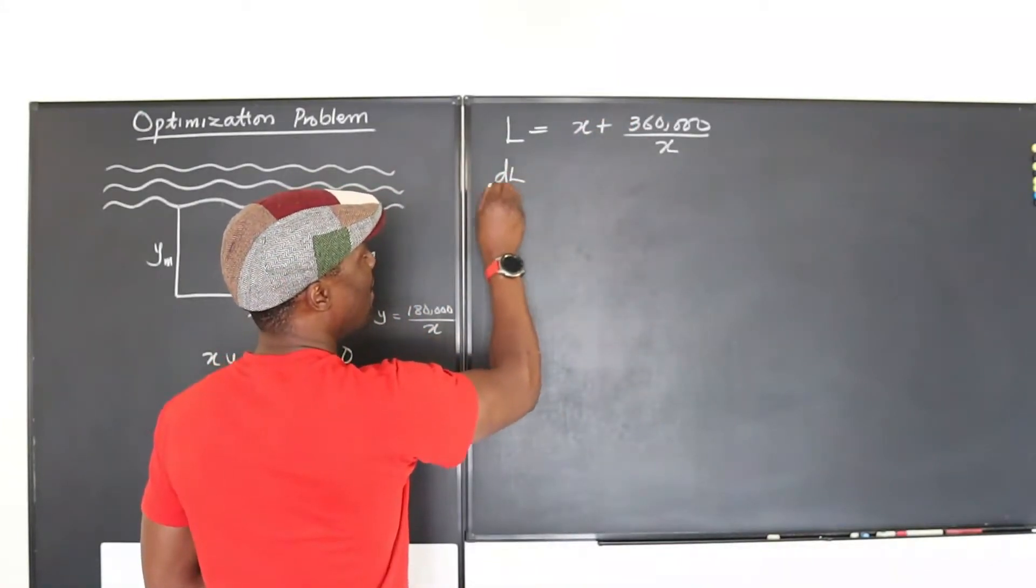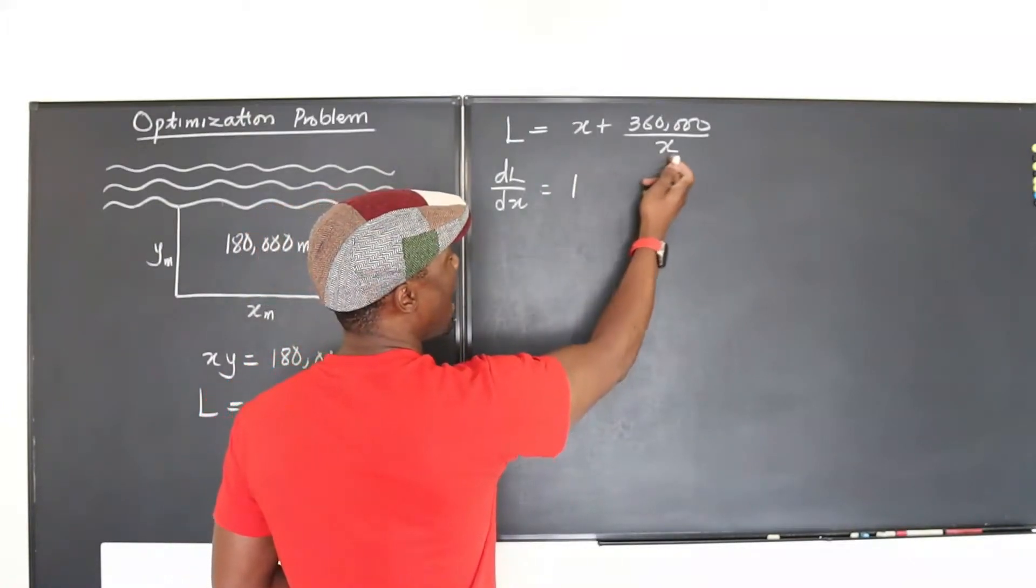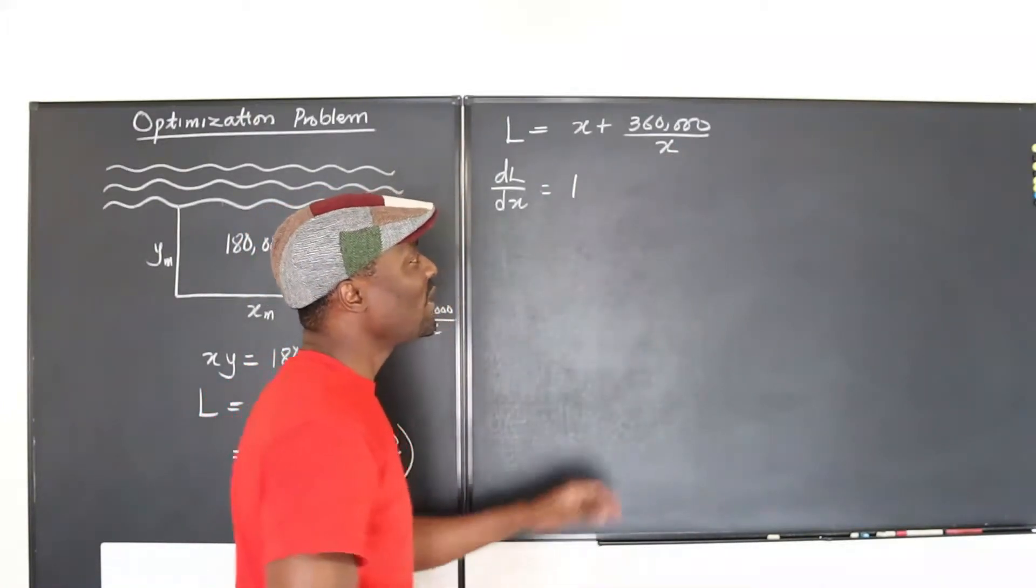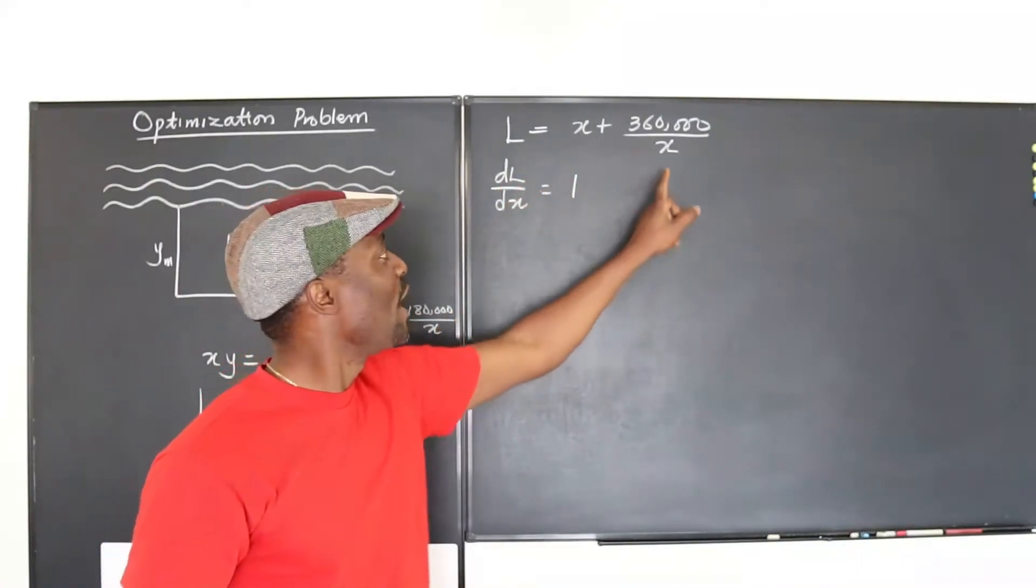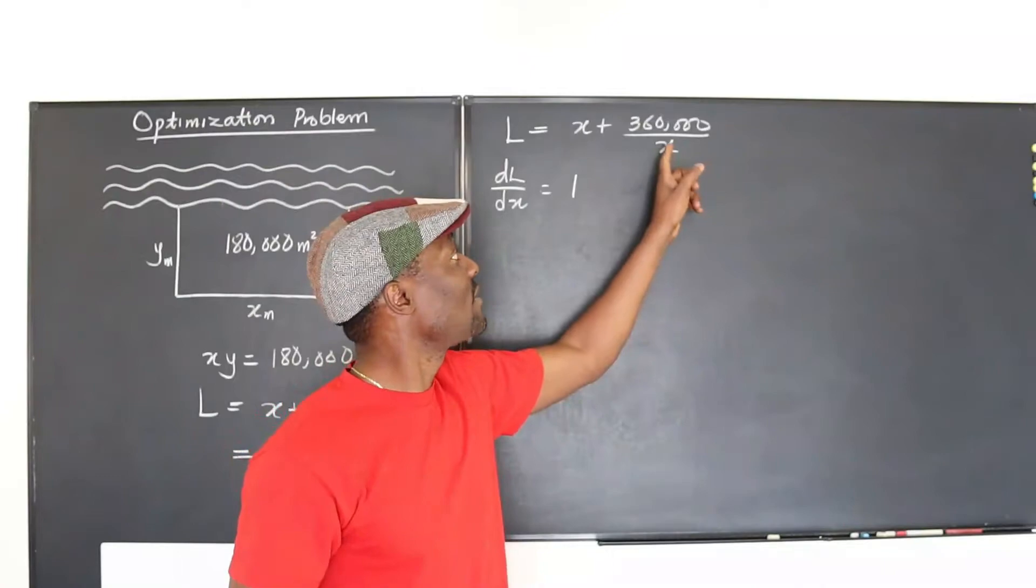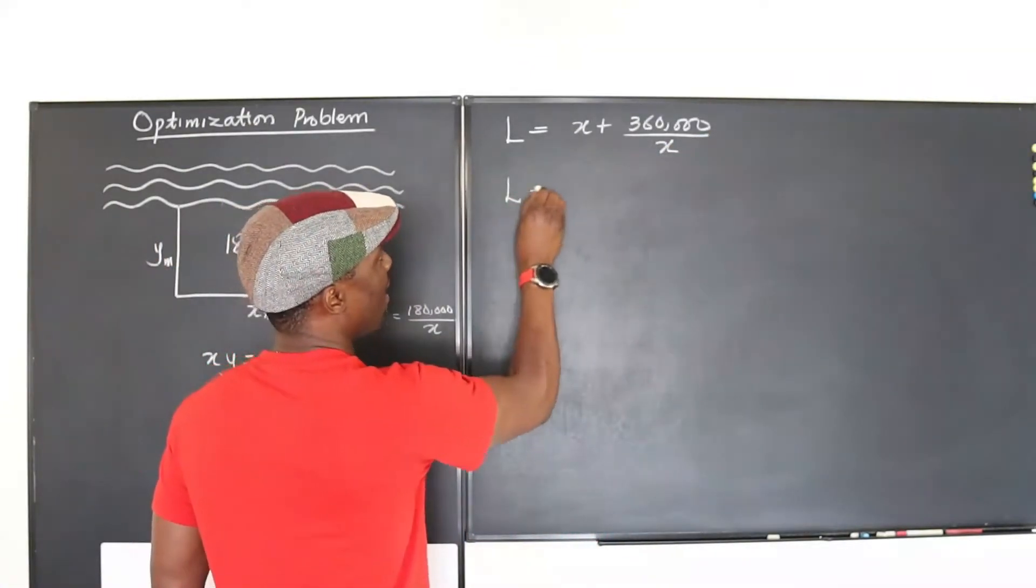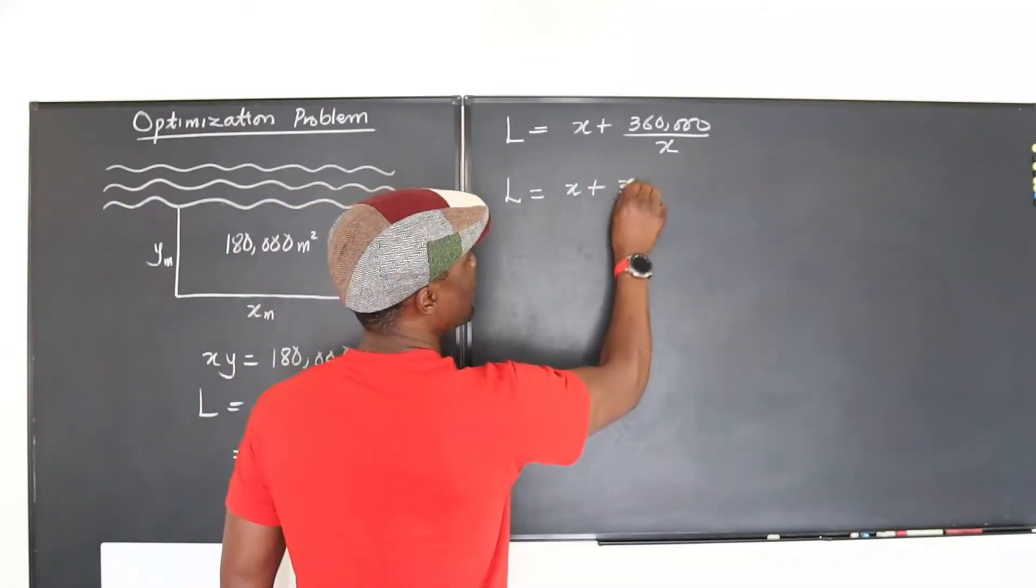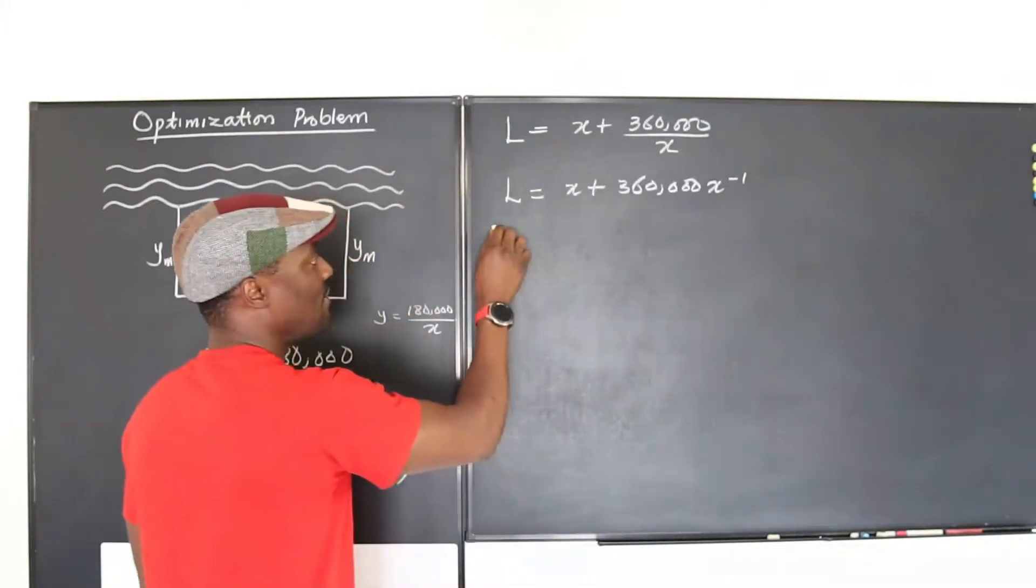It will be zero because at that point when something reaches the minimum, it can no longer go down. It has to change direction as long as it keeps continuing, and that's what we're counting on. So we're looking for that point where it stops going down. So let's differentiate this. This doesn't look nice enough to differentiate, so let me change this expression to 360,000 times x to the negative one. So we're going to write this as L equals x plus 360,000x to the negative one.